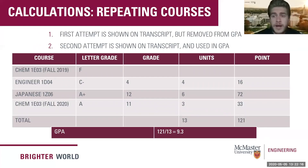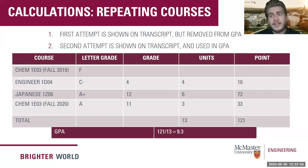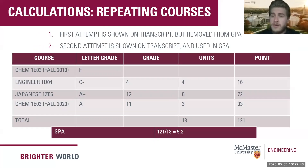Following up, the student has retaken Chem 1E03 in fall 2020 and achieved a letter grade of A. The previous attempt is now removed from the GPA calculation and only the new attempt is used. To reiterate, if the student had originally taken this course in fall 2017, that course would still remain in the GPA. But since the student repeated it under the new policy, the GPA is now upgraded to a 9.3.